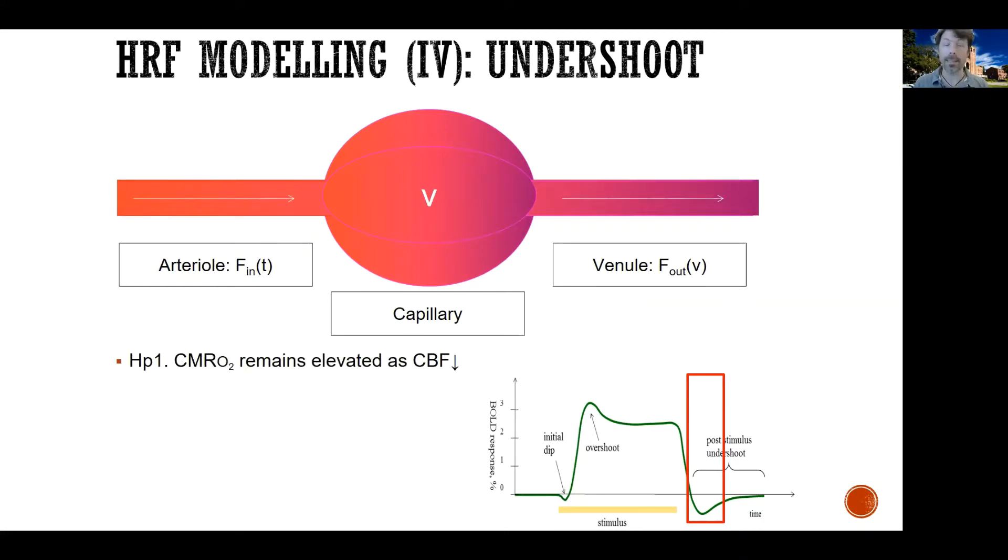One is that the cerebral blood flow, CMRO2, slows down. And as that happens, the CMRO2 remains elevated as the amount of oxygen that has flooded the vein slowly decreases. So the CBF goes down and it takes a little longer for the metabolism of oxygen to also slow down. So in other words, you have a little more consumption than before, but you have less CBF. So the signal is more distorted because you end up with more deoxyhemoglobin in the capillary and the vein.